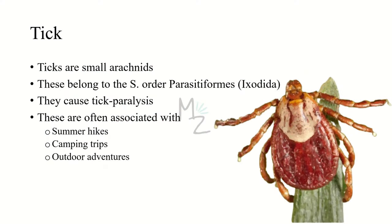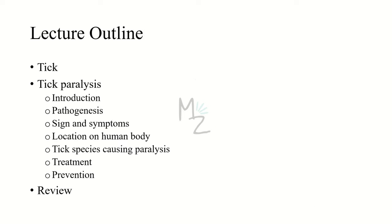Ticks are small arachnids belonging to the super order Parasitiforms and the order Ixodida. They are responsible for causing tick paralysis, and not only tick paralysis — there are other diseases like ehrlichiosis and so forth, which we'll talk about. They are often associated with summer hikes, camping trips, and outdoor adventures.